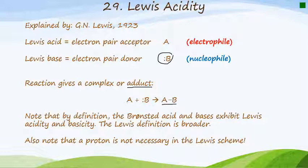By definition, most of the Bronsted acids and bases that we have learned about already exhibit Lewis acidity and basicity. It's just that this definition is a little broader and something very important to note is that a proton is not necessary at all when we are looking at Lewis acids and bases.